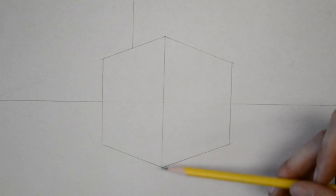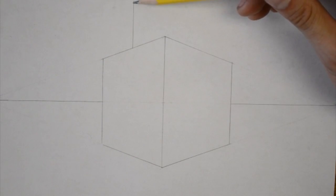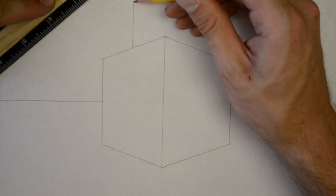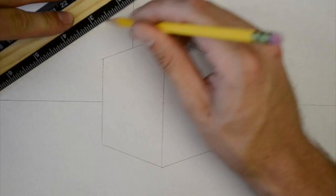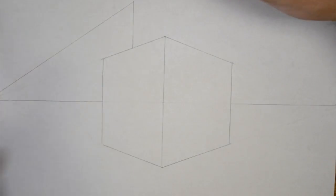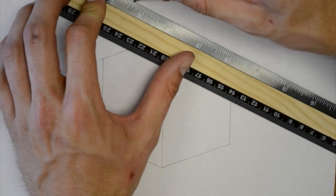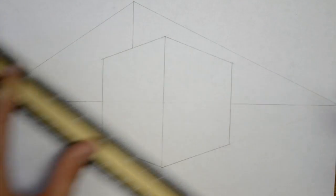Now, just like with this line, I have to take the top and connect both lines to my vanishing points. So there's one, and there's two.